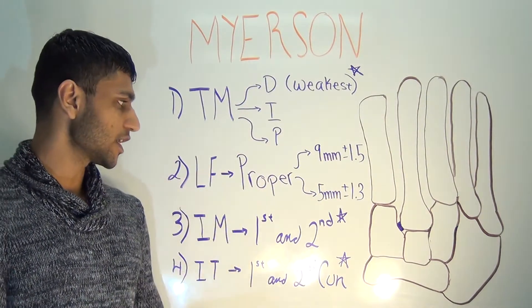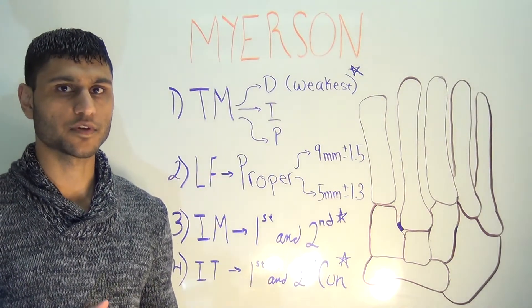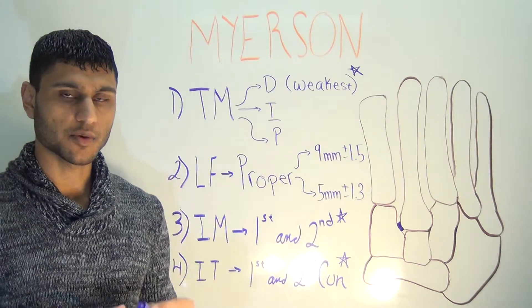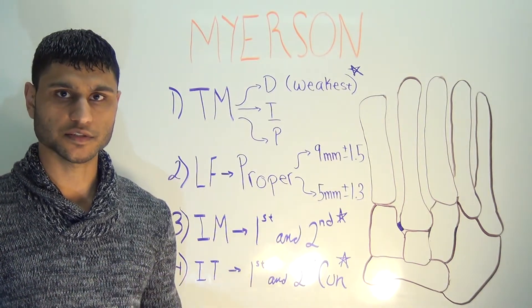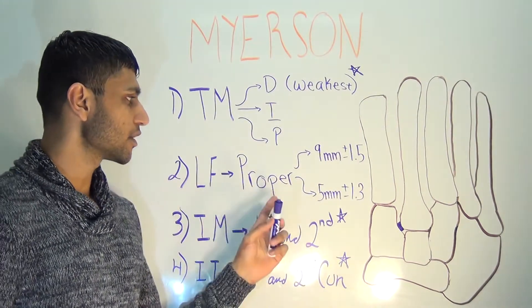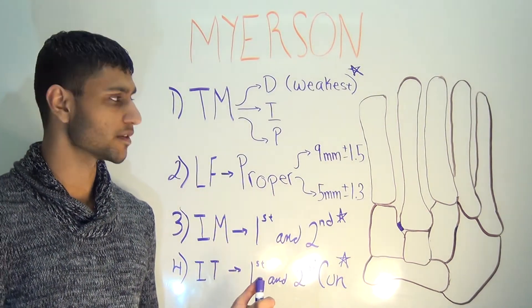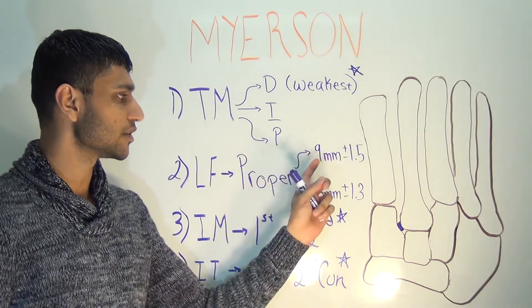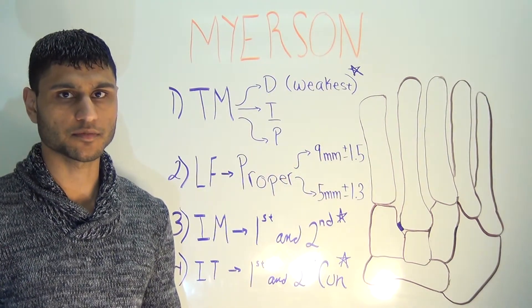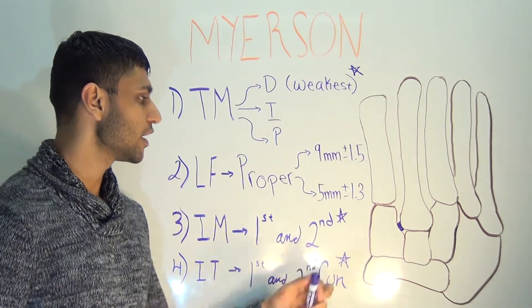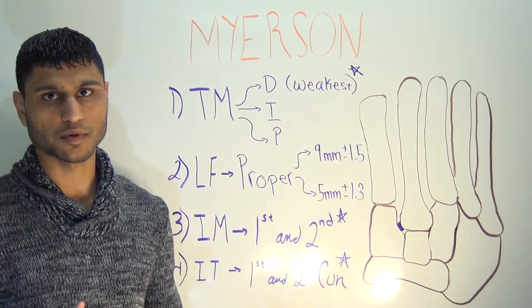Sometimes you'll hear radiologists and surgeons say the Lisfranc proper ligament. When they say proper, they're referring specifically to the interosseous component. On MRI, normally the interosseous component of the Lisfranc ligament has a length of about 9 millimeters with a standard deviation of about 1.5, and a width of about 5 millimeters, give or take 1.3.